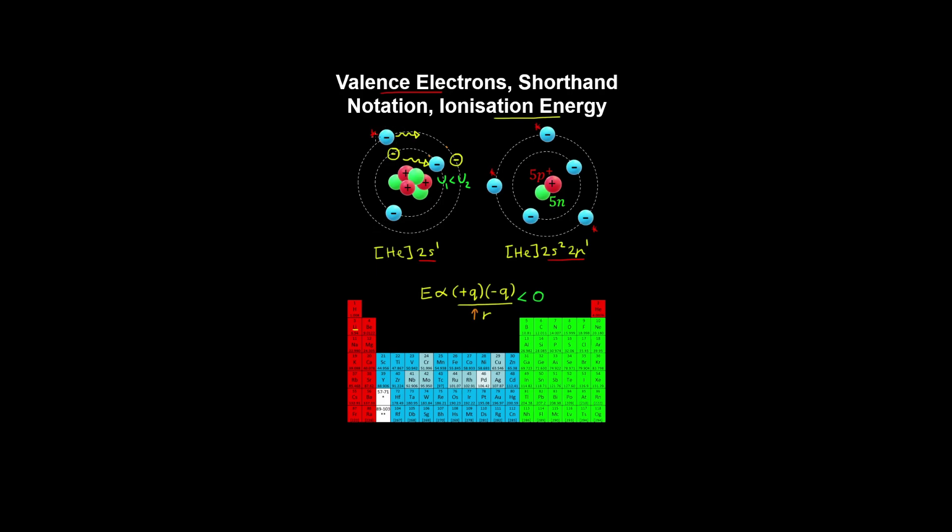So you can imagine it's a lot easier to ionize a valence electron, which is further from the nucleus than the inner or core electrons.